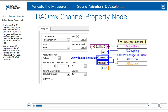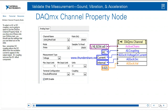To select AC or DC coupling in LabVIEW, you're going to need to use a DAQmx channel property node. If you drop one onto your DAQmx task, you should see the relevant settings. Remember, DC coupling allows the DC offset from the excitation current to appear in the output signal, while AC coupling removes the DC offset component.